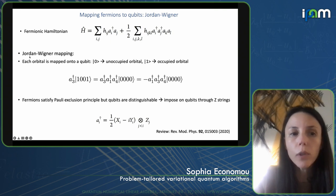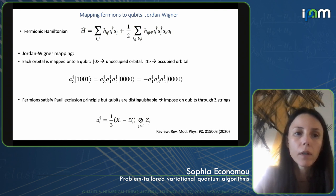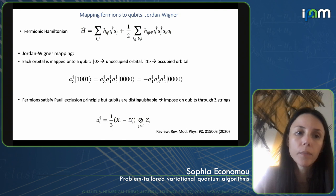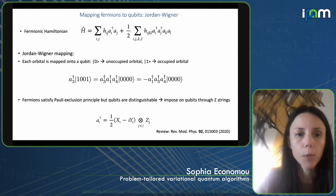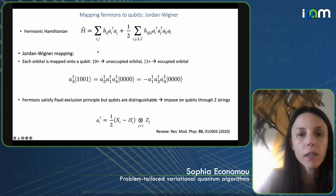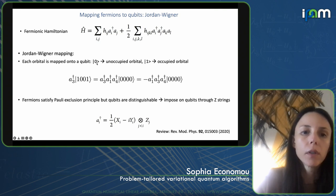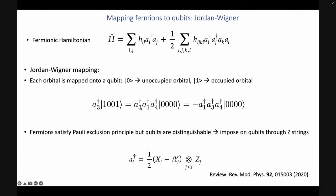The Jordan-Wigner mapping is perhaps the most intuitive mapping because it follows the binary sense that fermionic spin orbitals and qubits share. Because of the Pauli exclusion principle, a spin orbital can be either occupied or unoccupied — you cannot put two fermions in the same spin orbital. A qubit can be state 0 or 1, so it's intuitive to map the occupation of an orbital into the state of a qubit. But then we have to worry about anti-commutation relations and the minus sign when switching two fermionic operators.